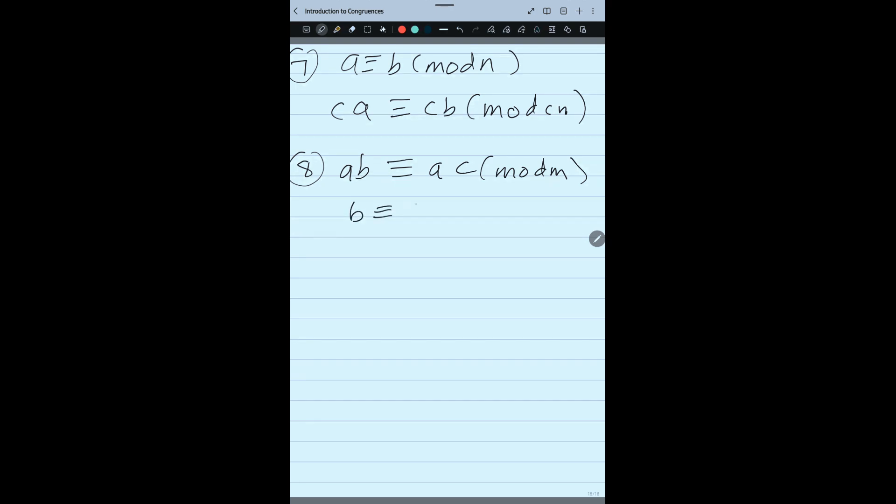Yes, I can write B congruent C mod M if GCD of A and M is equal to 1. So please take care of this thing while doing the question. Simply don't divide if they have the common multiple. You have to check the GCD of A and M. Means this number and this number should be co-prime.